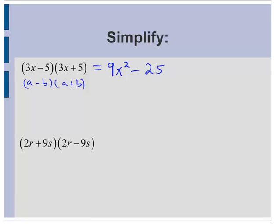2r plus 9s times 2r minus 9s. Why don't you try this one out on your own? I have an a plus b times an a minus b, so I'll get an a squared minus b squared. 2r times 2r, that's 4r squared minus 9s times 9s, 81s squared.